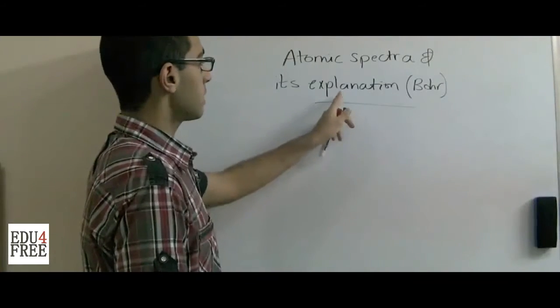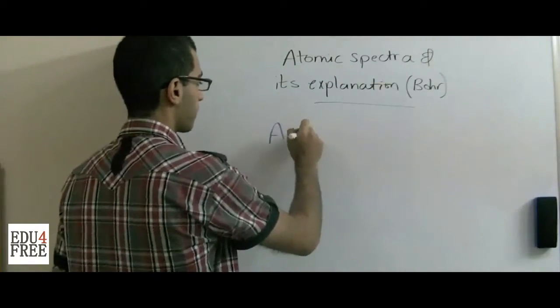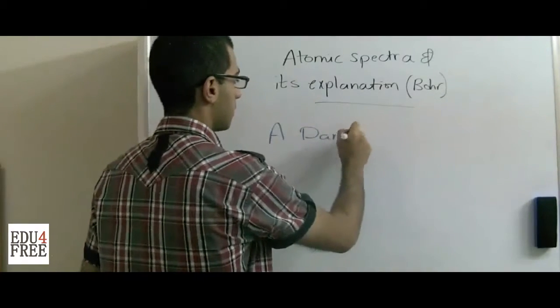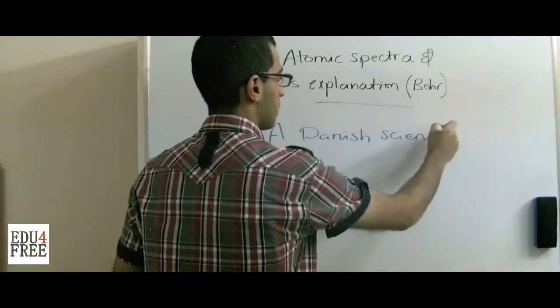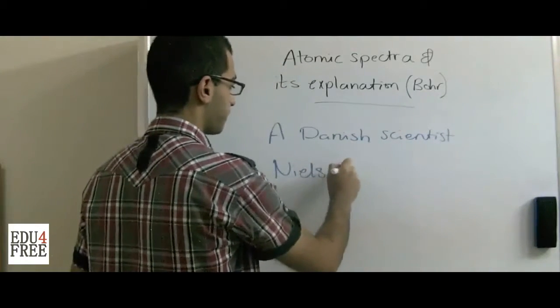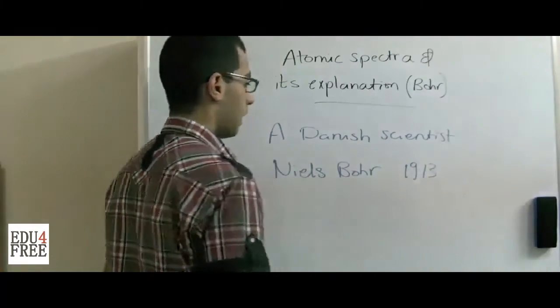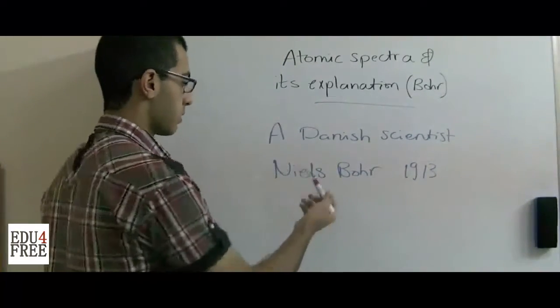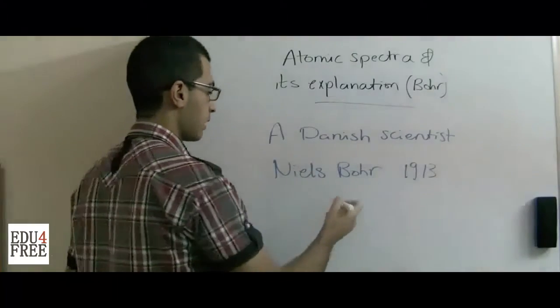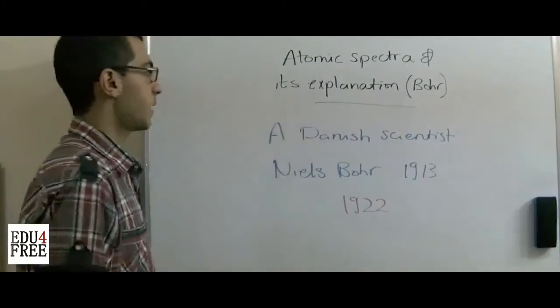This atomic spectra was discovered by a Danish scientist called Niels Bohr in the year 1913, and for this discovery he was rewarded the Nobel Prize in the year 1922. So, what's the atomic spectra?